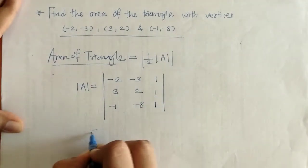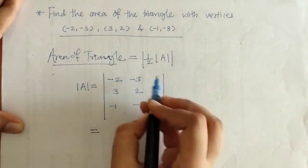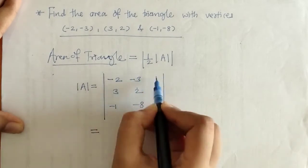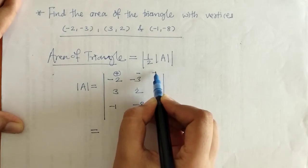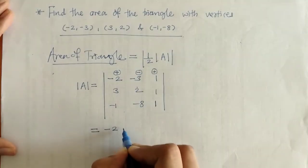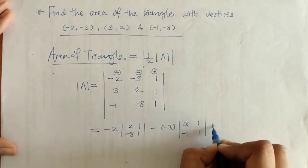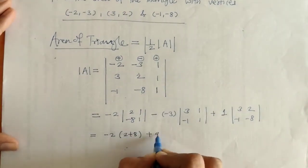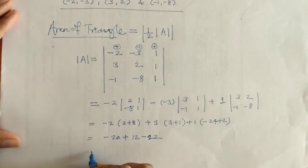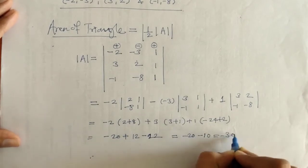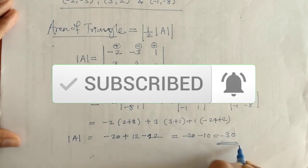Now we can solve this determinant. We will expand this determinant by the first row, applying the appropriate signs, and solve accordingly.